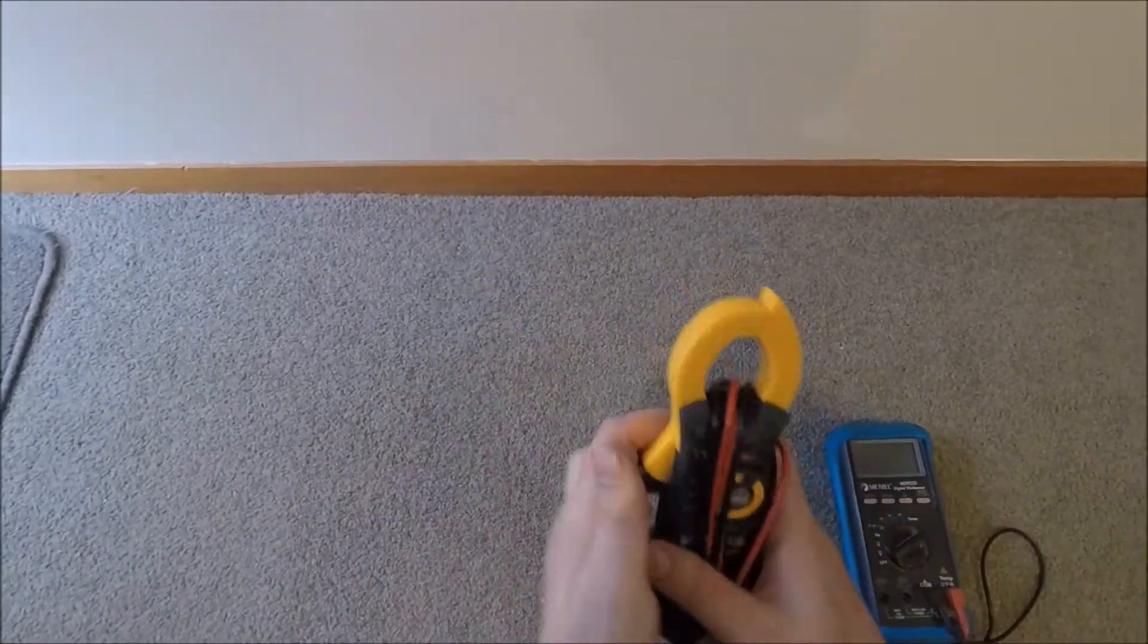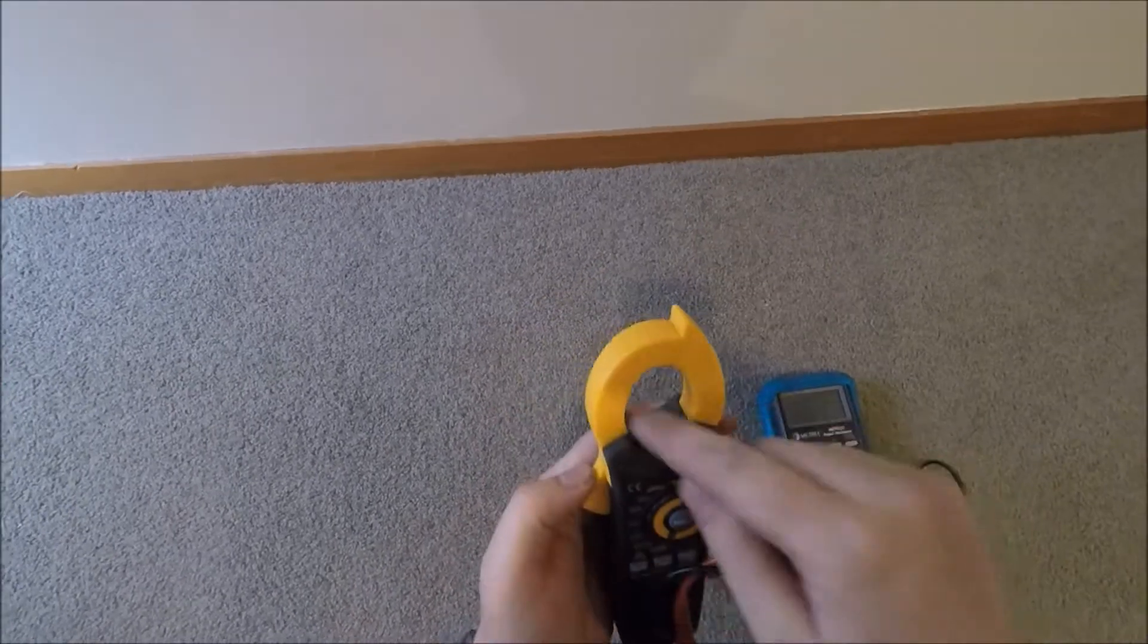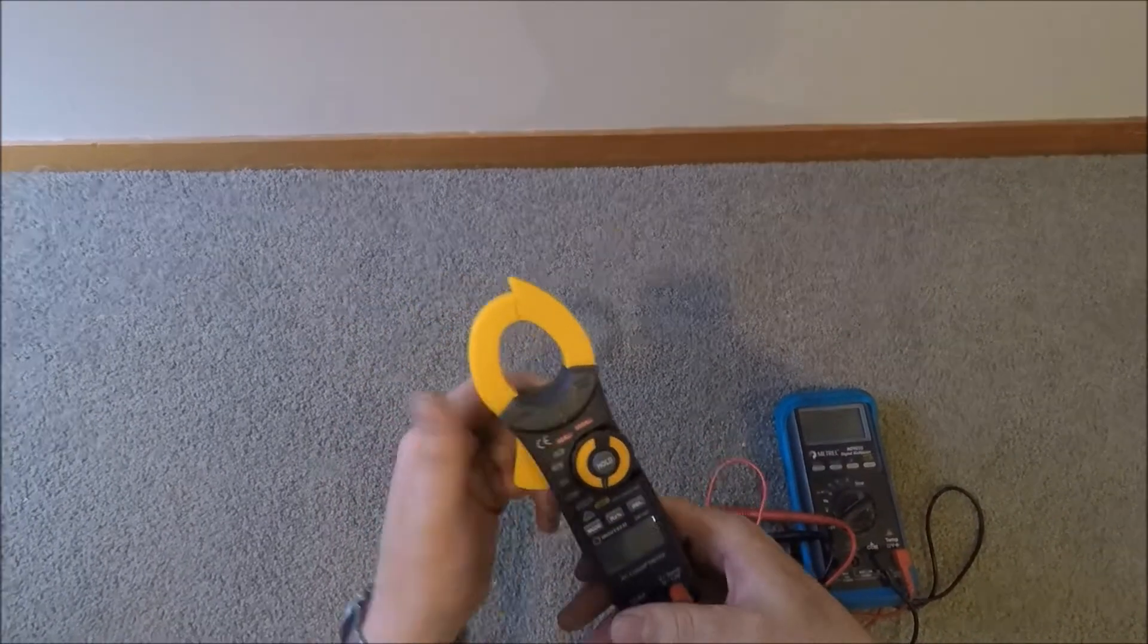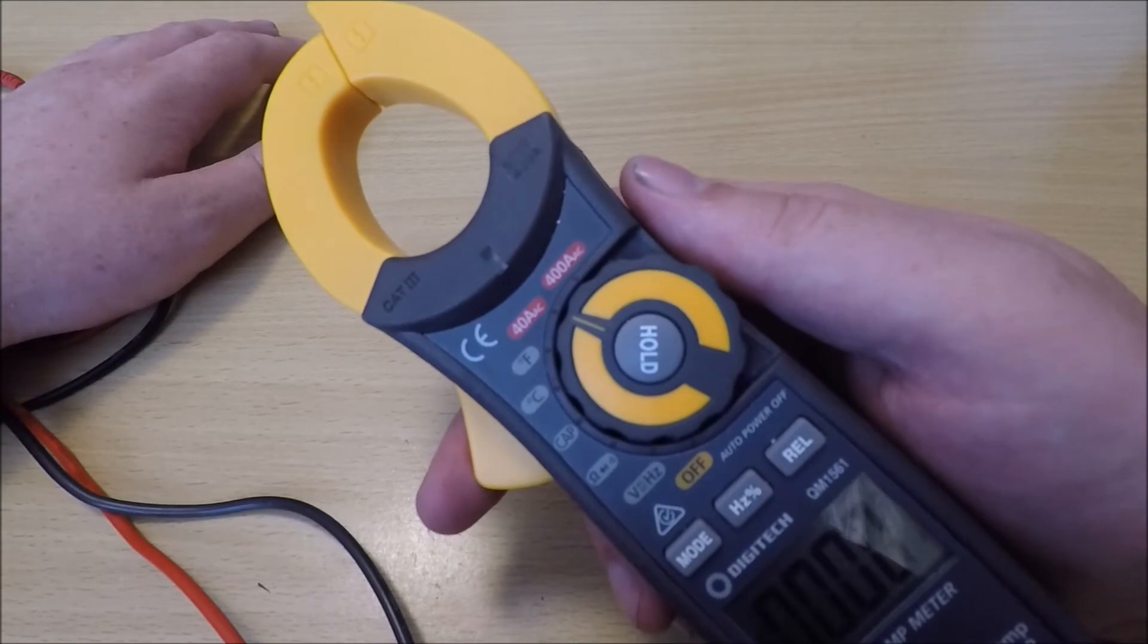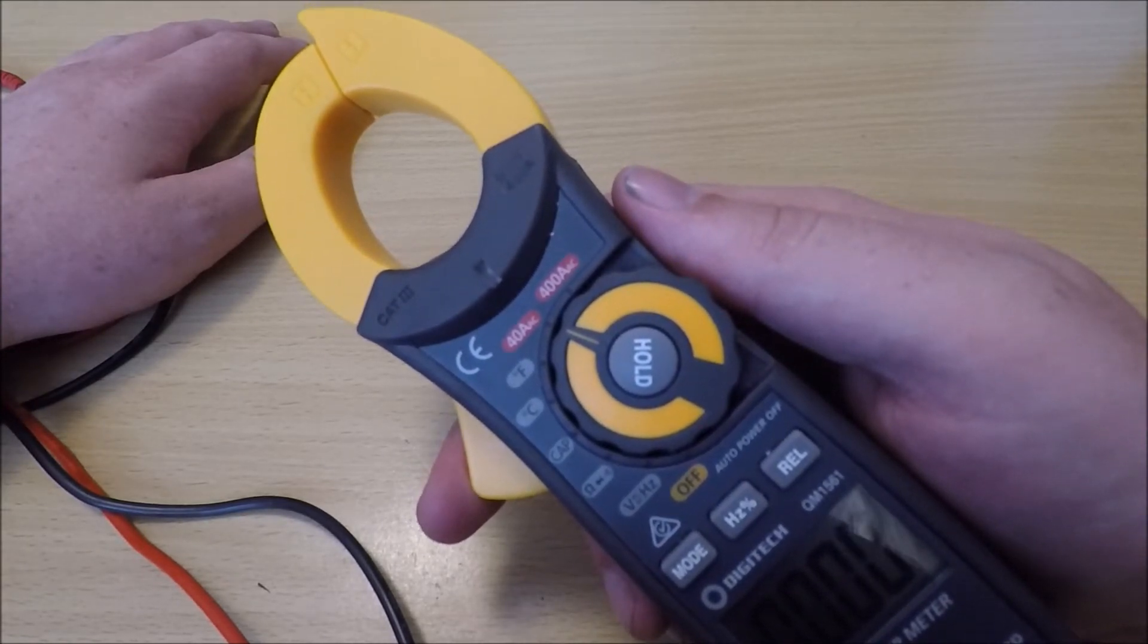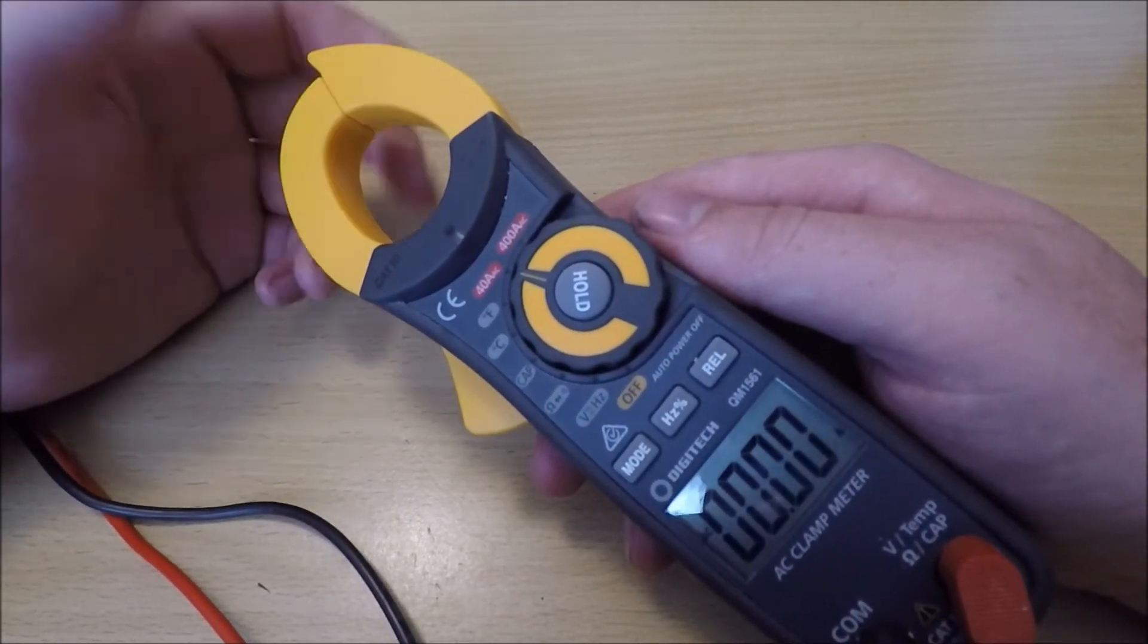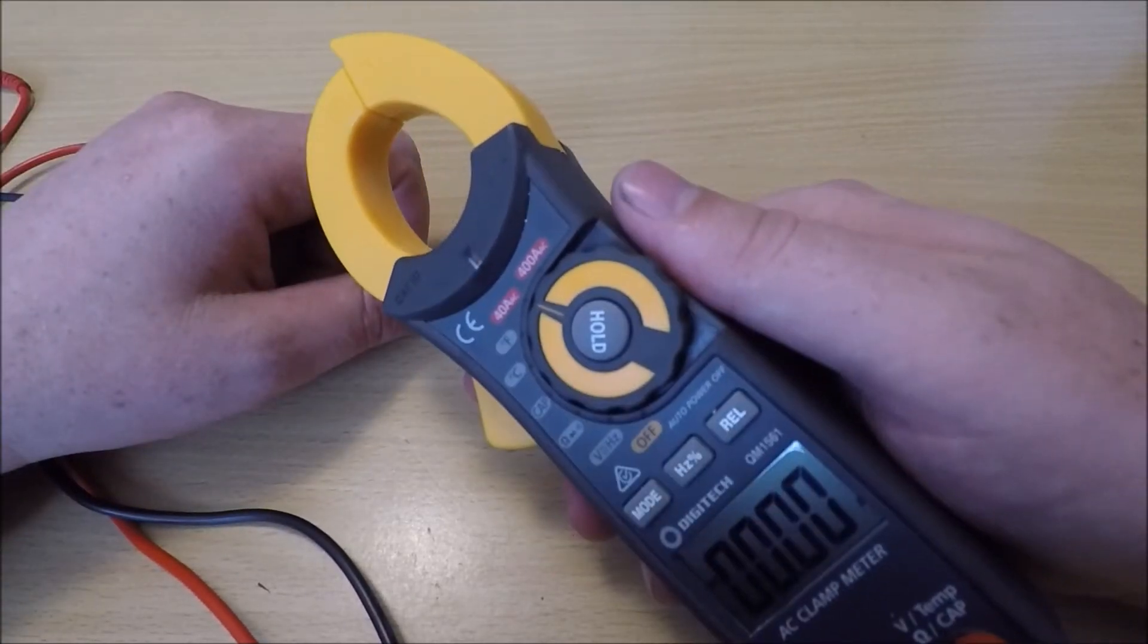That's the handy thing about these clamp meters. You can just clamp this end, this loop, around the cable and it will read how much current the circuit is drawing, how much load is being drawn through the cable. This is especially handy for doing towel rails, underfloor heating, and hot water cylinders where they've got elements that take a long time to heat up. If you want to test that they're working, you can put this around them, see how much current they're drawing straight away, and you'll know whether they're going to work properly.